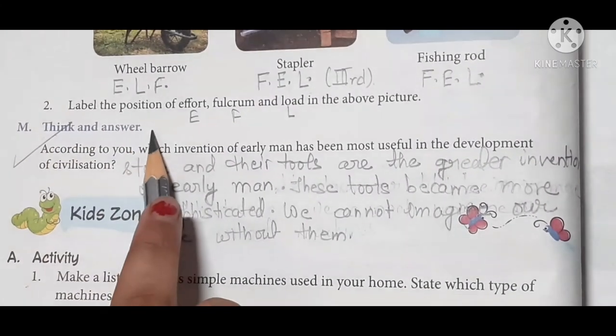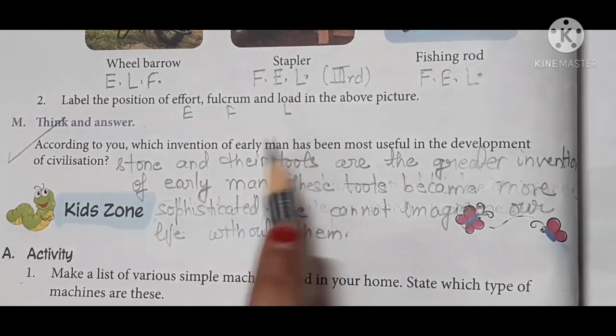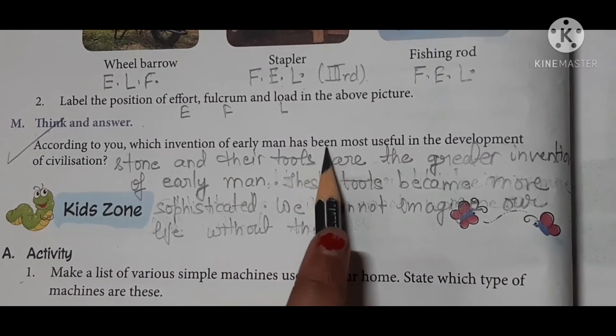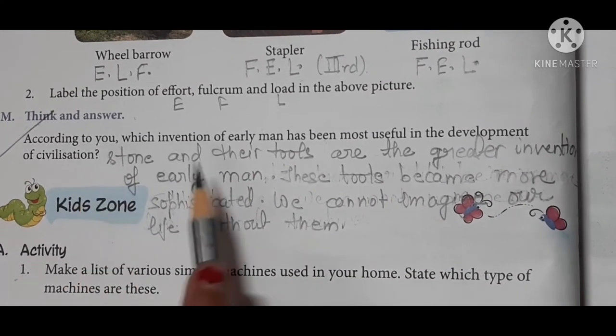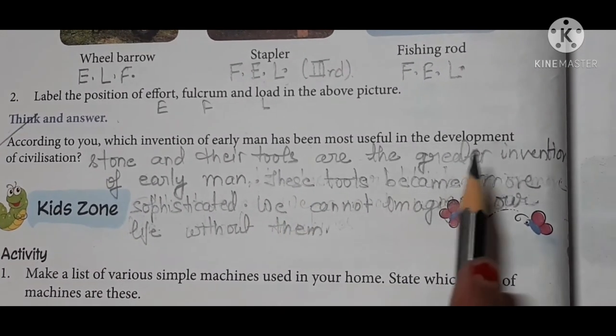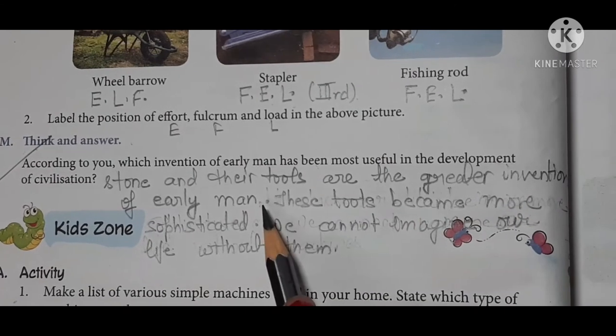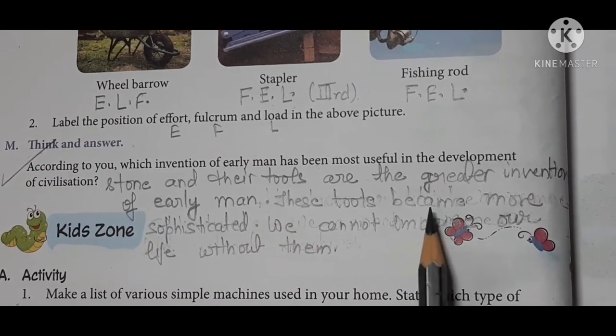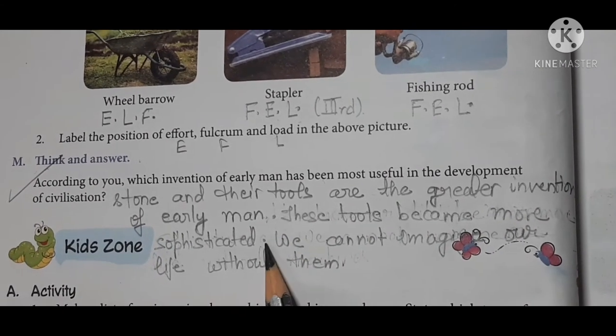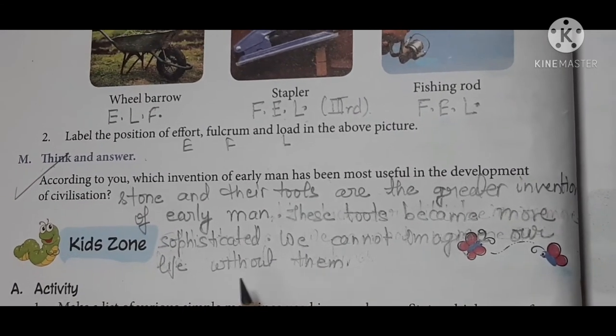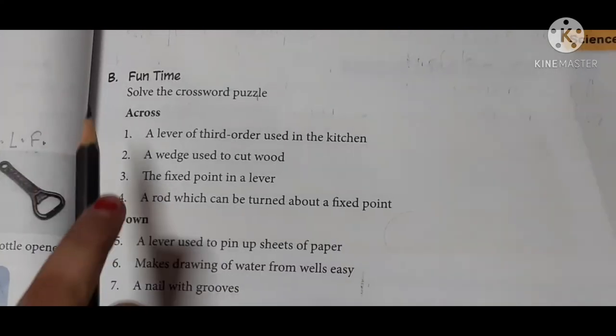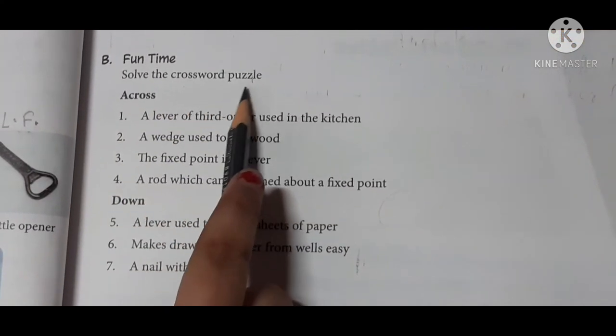Think and answer. According to you, which invention of early man has been most useful in the development of civilization? Stone and their tools are the greatest inventions of early man. These tools became more sophisticated. Nowadays, we cannot imagine our life without them. Fun time, solve the crossword puzzle.